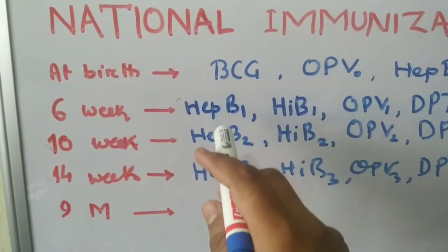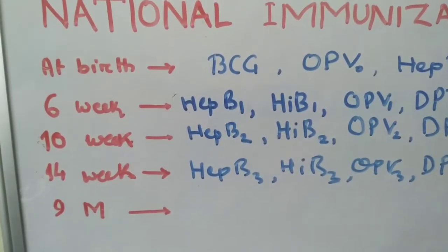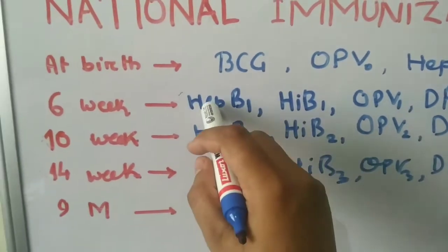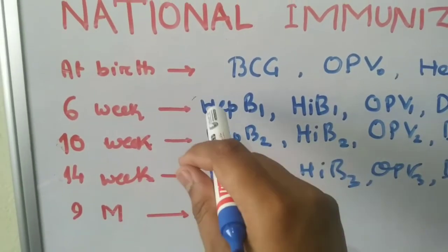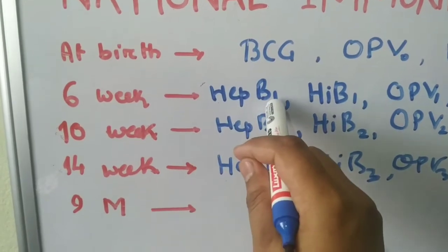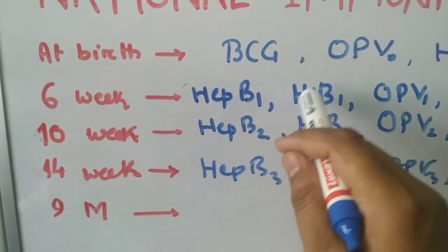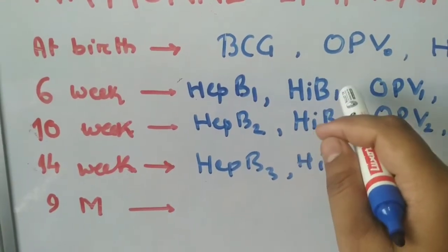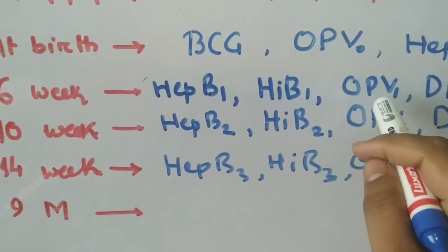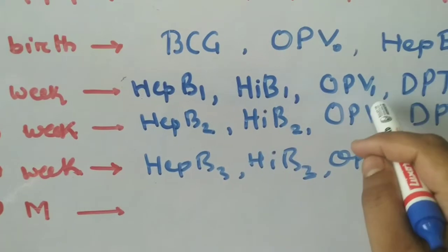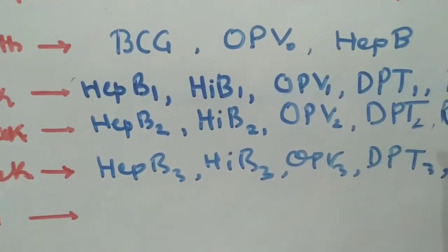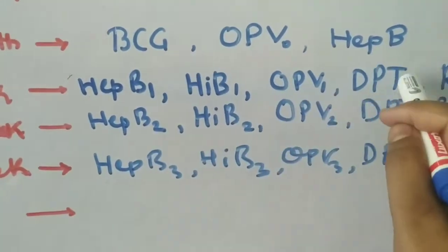The mnemonic is HOD READS Public Fund. H stands for H2: first Hepatitis B dose 1, then Haemophilus Influenzae B1. After that comes OPV1, then DPT1. HOD, up to here.